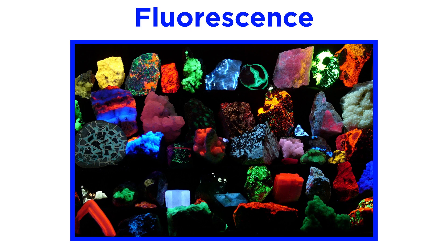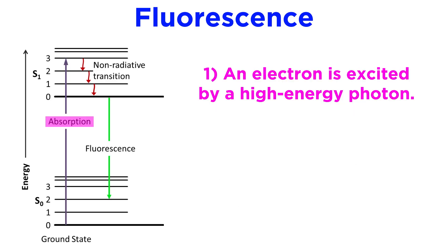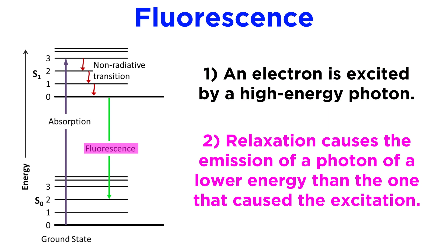Fluorescence microscopy functions, as one might imagine, on the principle of fluorescence. So let's first understand what this word means. Fluorescence occurs when a fluorescent molecule or protein absorbs a high energy photon which excites an electron within the molecule. When the electron returns to its lower energy state, this emits a photon of light that is at a lower energy than the photon that originally excited the electron.